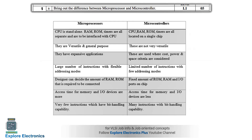Before going to the differences, let me give you an example so that you can remember easily. A microprocessor — if you have a personal computer or a laptop, it will have an Intel or AMD processor. That processor is a microprocessor, and with it there will be RAM externally, a hard disk, and all other supporting components external to that processor.